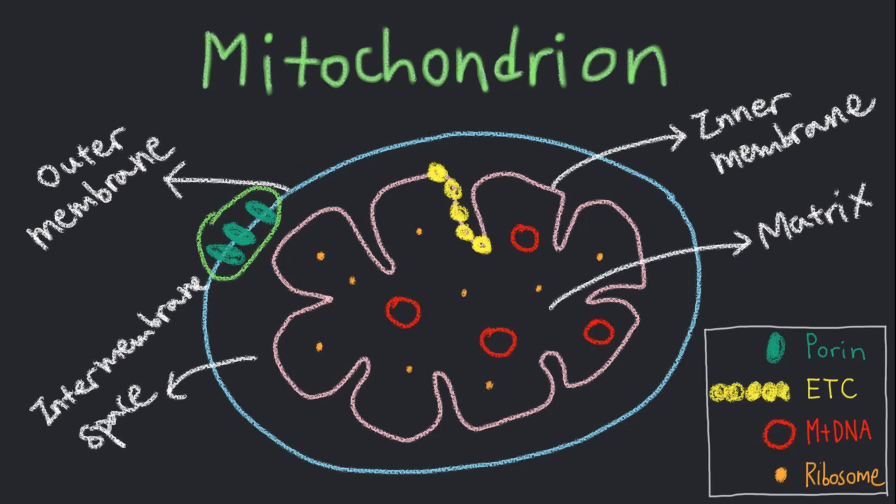In contrast, the inner membrane has much more restricted permeability and contains proteins involved in electron transport and ATP production.